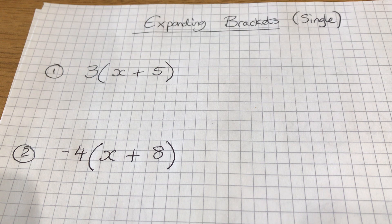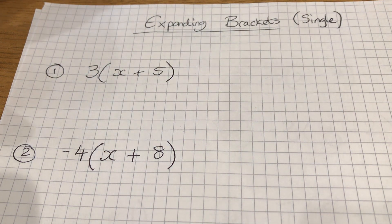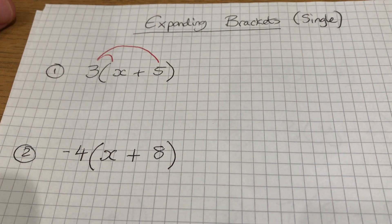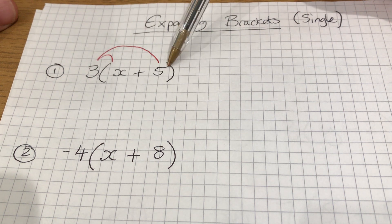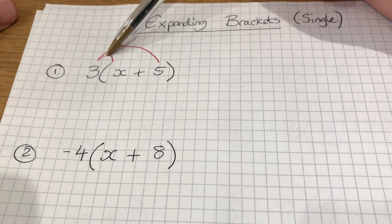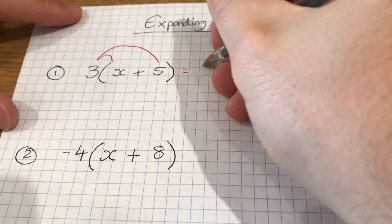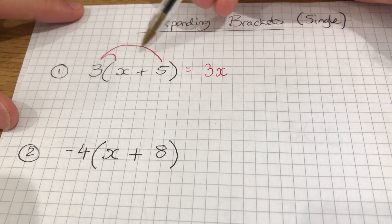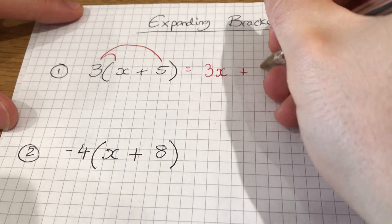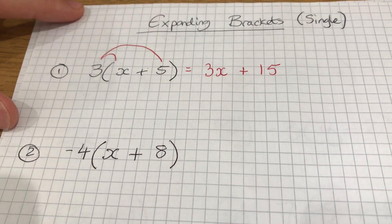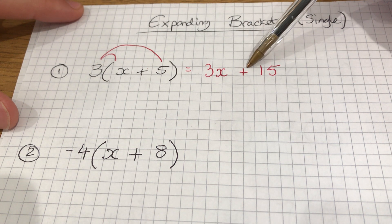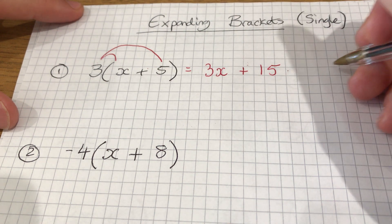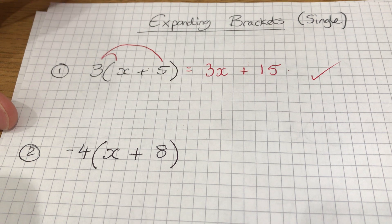Question 1. What we're doing with expanding is multiplying the thing on the outside by both the things on the inside. So I'm going to do three lots of x — we don't know what x is, but three lots of x is just 3x. Then three lots of positive five is 15. Because it's positive 15, we put a plus between them: 3x plus 15. And that is it.